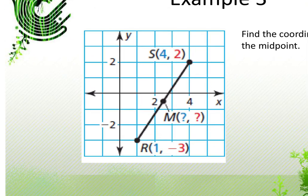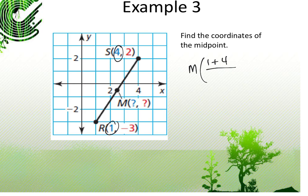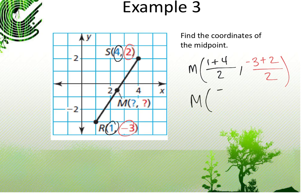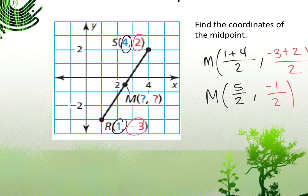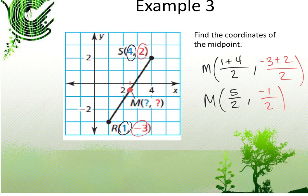Find the coordinates of the midpoint of SR, where S is at (4, 2) and R is at (1, −3). The midpoint is ((1 + 4)/2, (−3 + 2)/2) = (5/2, −1/2), which is 2.5 and −0.5. So our midpoint is at (5/2, −1/2).